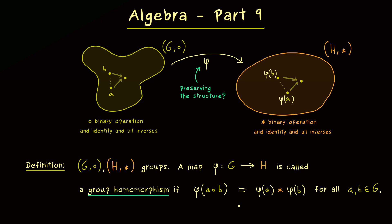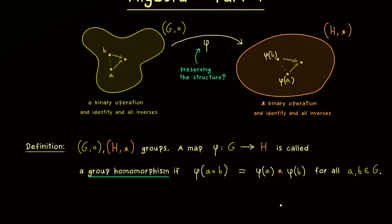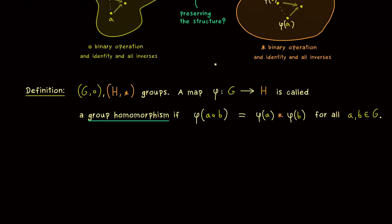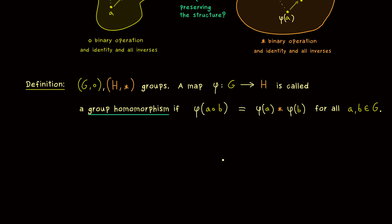So this is the definition of a group homomorphism, and now you see the only thing we require here is that the binary operation is preserved. At first this looks a little bit strange, because before we already said that we also want to preserve the identity and all the inverses. However, the good thing is that this simple definition already implies the preserving of the additional structure — meaning we don't have to put it into the definition, because we can already prove it by using this formula.